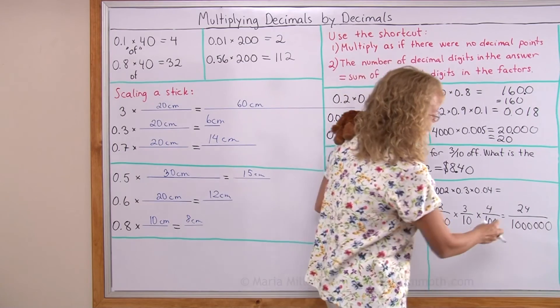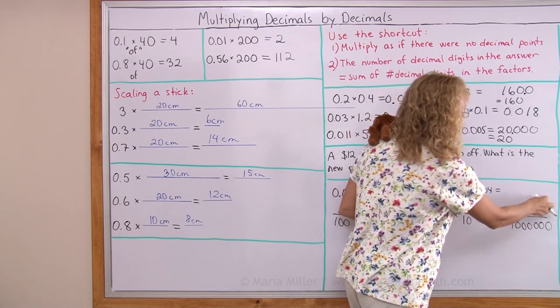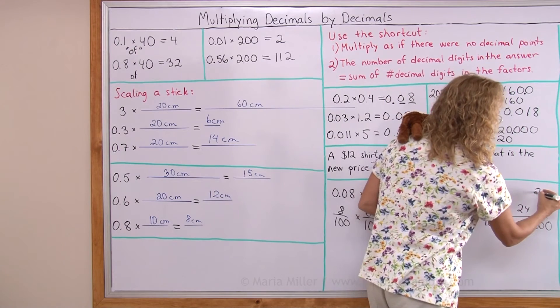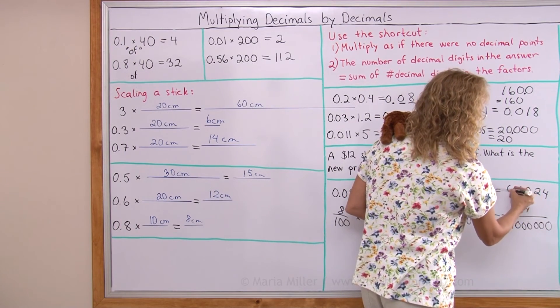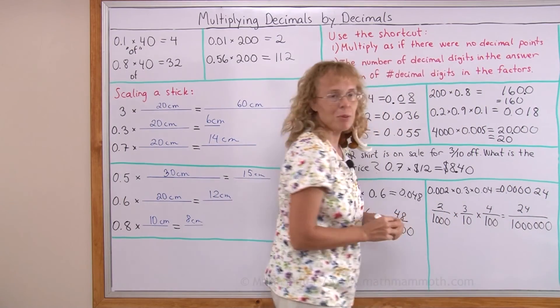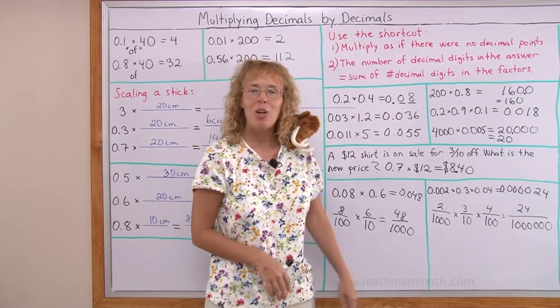Okay. And however many zeros are here is how many decimal digits go here. So twenty-four and I have to have six decimal digits. Okay. Like that. Twenty-four millionths. Okay. I hope this helps.